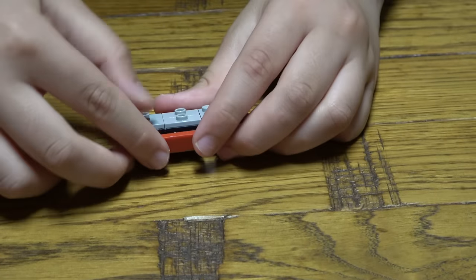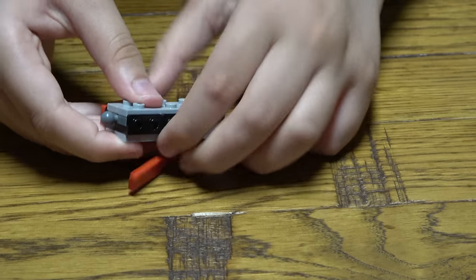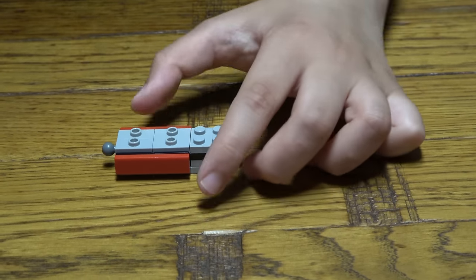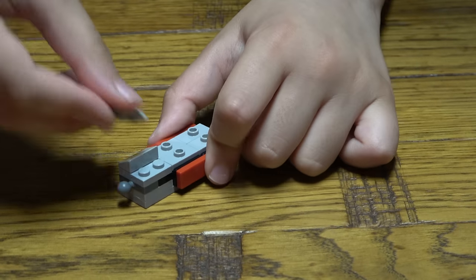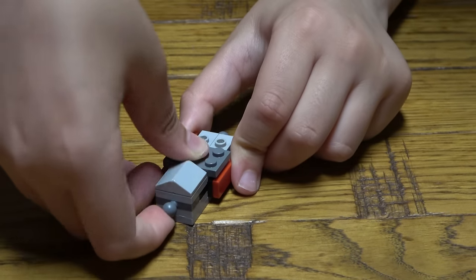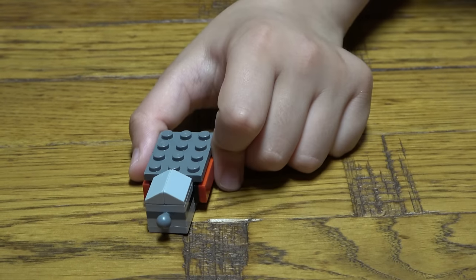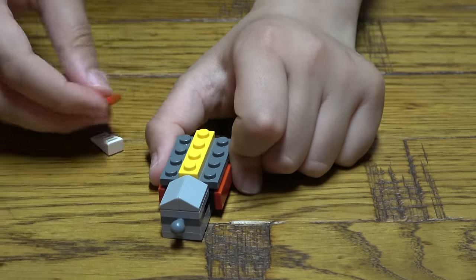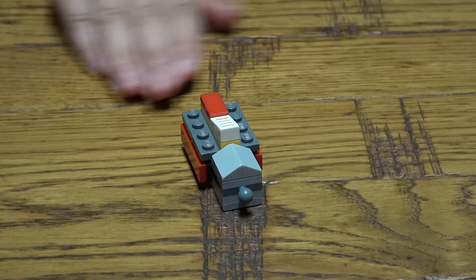And then next I'm going to place that there, place that there, place this here. There we go. Next we're going to do that. I'm going to place two of these. And then next I'm going to place those sides here, like so. And next I'm going to place this here, like so. Next, four of these.